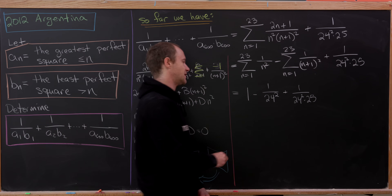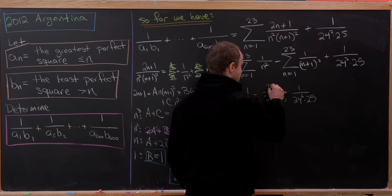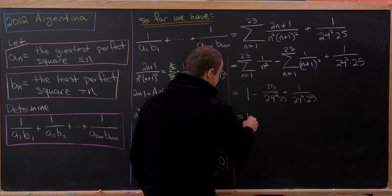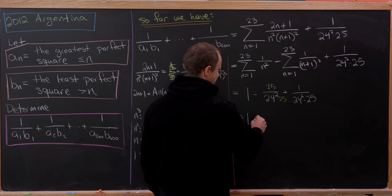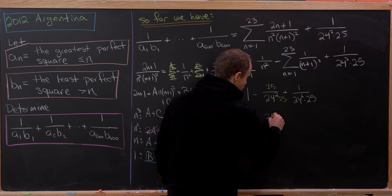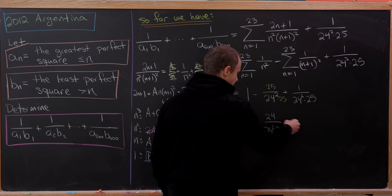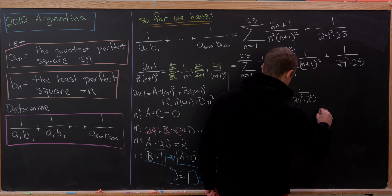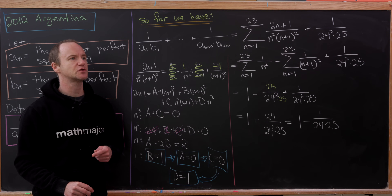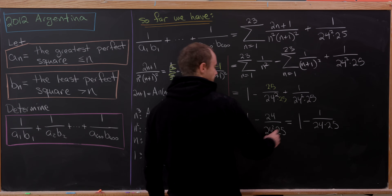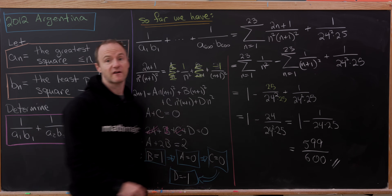Now let's find a common denominator of 24²·25. We get (25 − 1)/(24²·25) + 1 = 1 − 24/(24²·25) = 1 − 1/(24·25) = 1 − 1/600 = 599/600. That's our final answer.